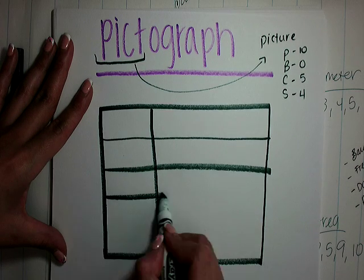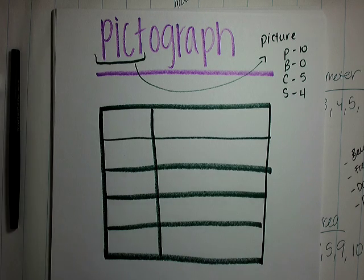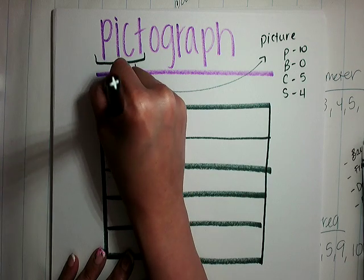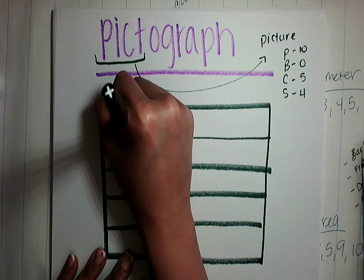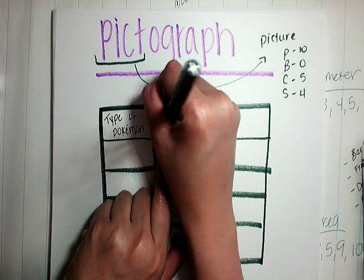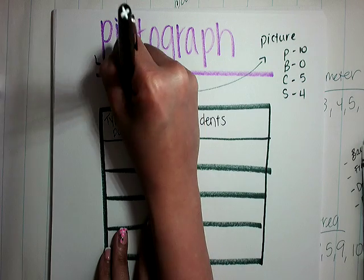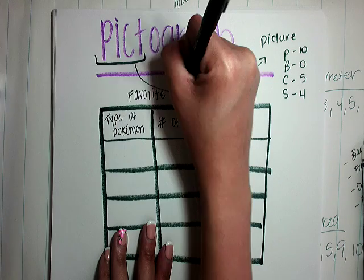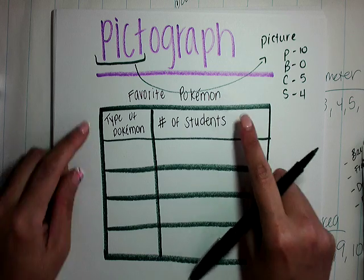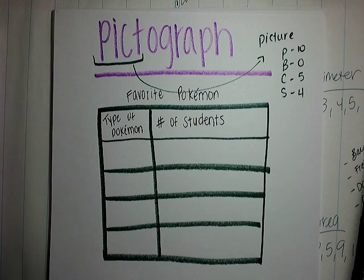So you're going to need a space for your title. These spaces are for my four Pokemon, and this is for my title. Here is going to go the name or type of Pokemon — same thing we've done on all of them: 'Type of Pokemon.' And over here is going to be 'Number of Students,' because remember, this whole graph is talking about favorite Pokemon.